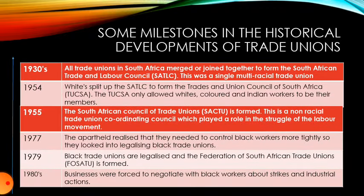Let us look at some milestones in the historical development of trade unions using a timeline. In the 1930s, all trade unions in South Africa merged together to form the South African Trade and Labour Council (SATLC). This was a single multiracial trade union, meaning blacks, whites, Indians, and coloureds could all join.